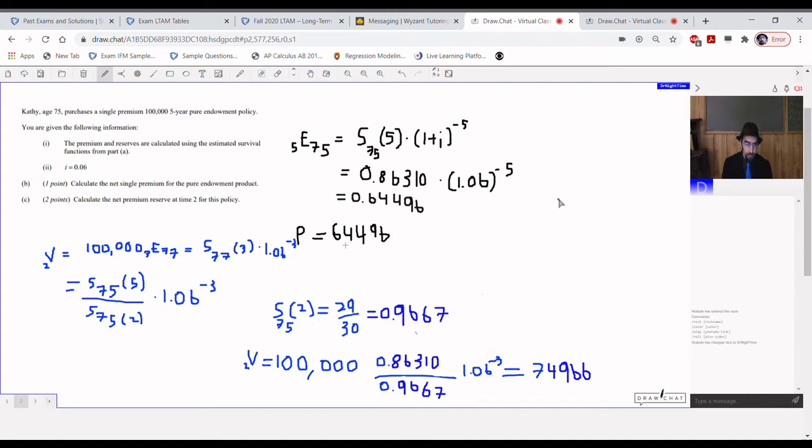Next part of the problem, Kathy, age 75, purchases a single premium $100,000 five-year pure endowment policy. You're given the following information. Premiums and reserves are calculated using the estimated survival functions from Part A, and there's a 6% interest rate. Next part of the question just says calculate the net single premium for the pure endowment product. So the endowment function is just probability of surviving those five years once we account for five years of interest or five years of discount. So you just take the 0.86310 times 1.06 to the negative 5 for the five years. You get 0.64496. Given $100,000 of this endowment, it ends up being $64,496. Not too hard.